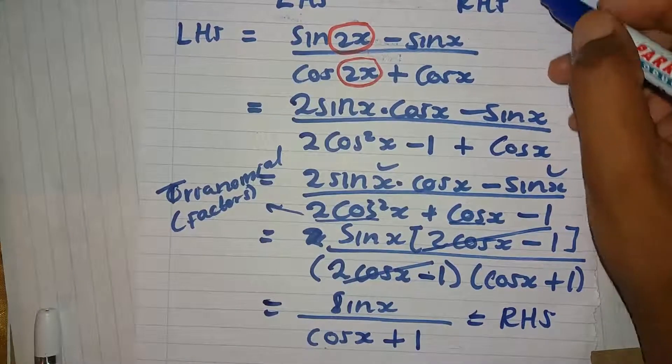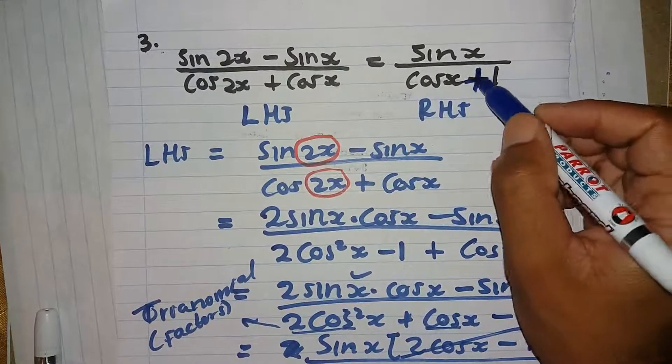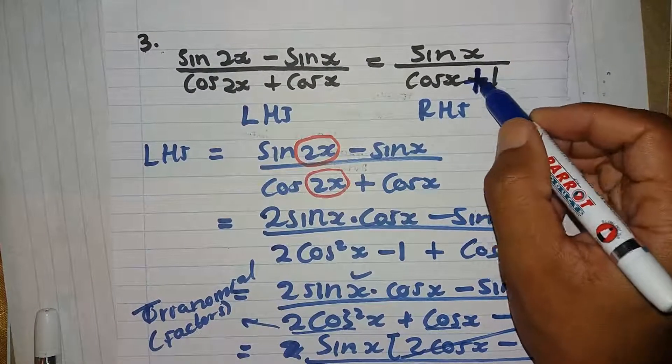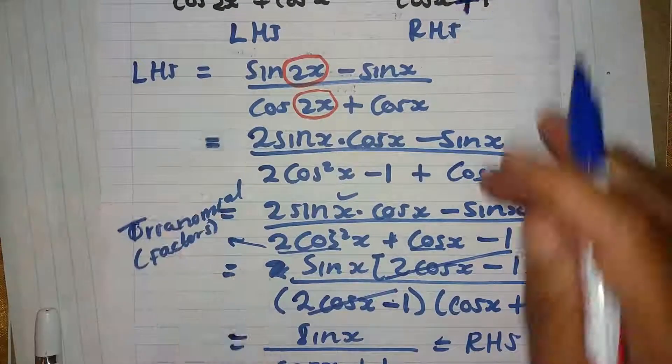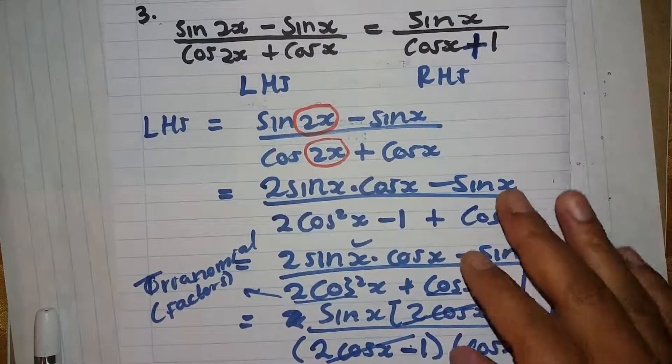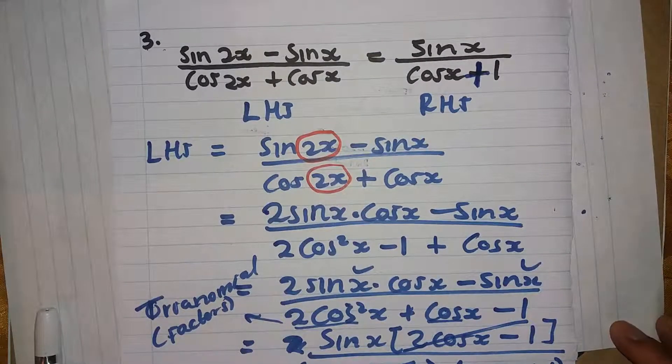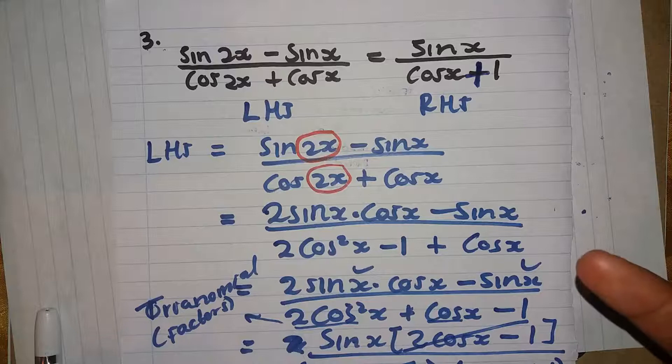It was supposed to be a plus one, not a minus. So whenever you have double angles, you apply the double angle formulas. Thanks for watching, catch you in the next video.